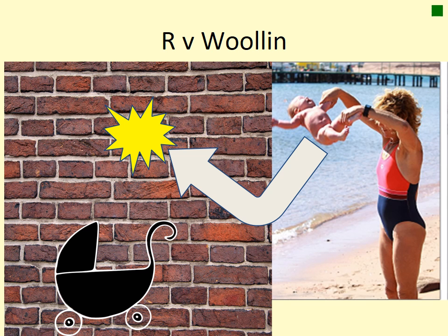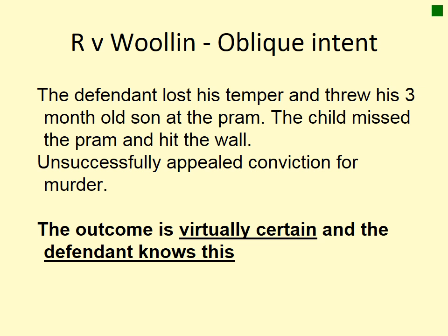The case of Woolin illustrates oblique intent. The defendant lost his temper and threw his three-month-old son at the pram. The child missed the pram, hit the wall, and died. The defendant was convicted of murder and appealed on the basis it wasn't his intention to kill the child. His appeal was unsuccessful because the outcome of throwing the child was virtually certain and, most importantly, he knew this. With oblique intent you must get both parts: it's not only virtually certain, but the defendant knew this.